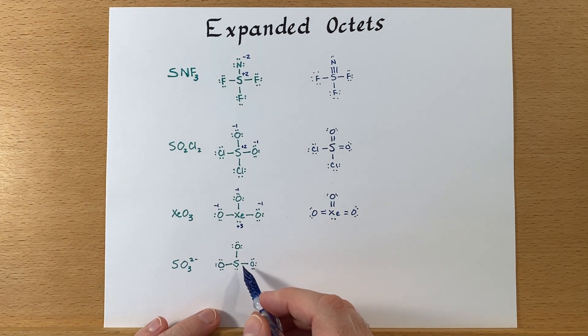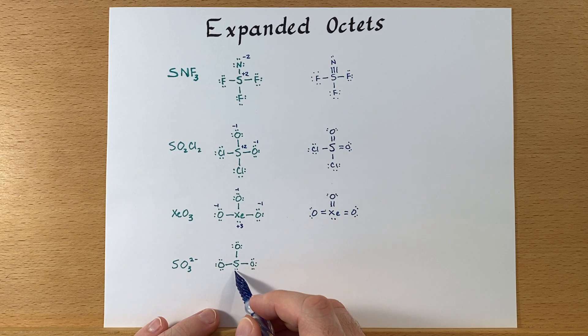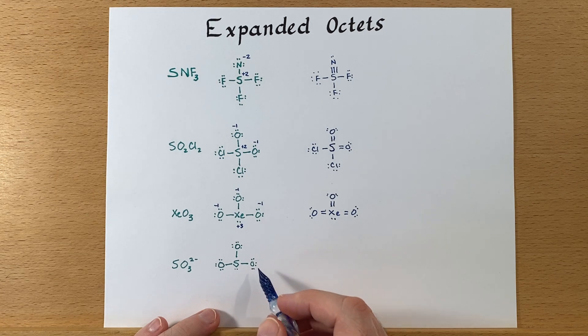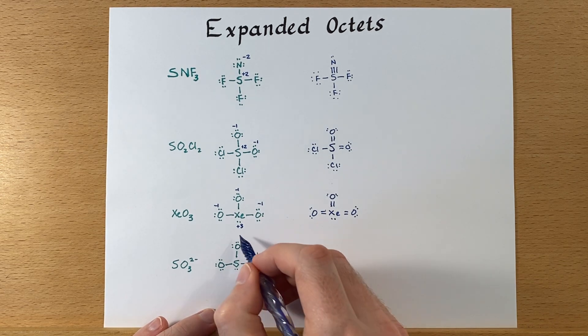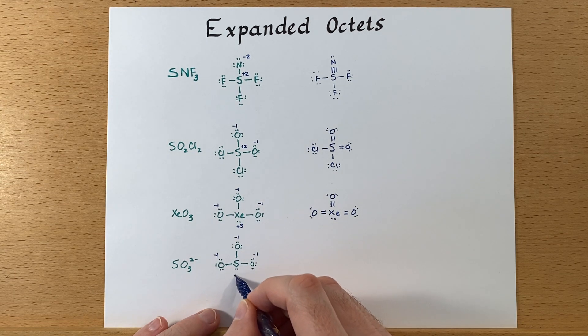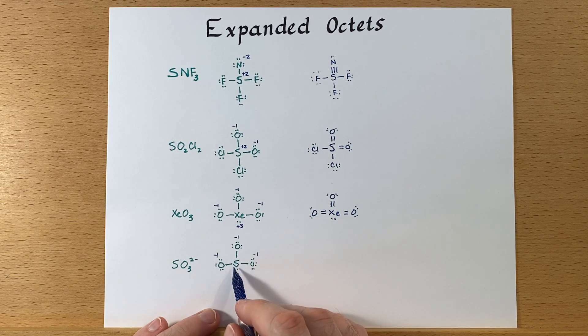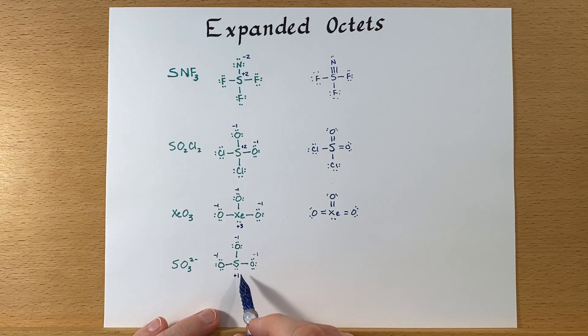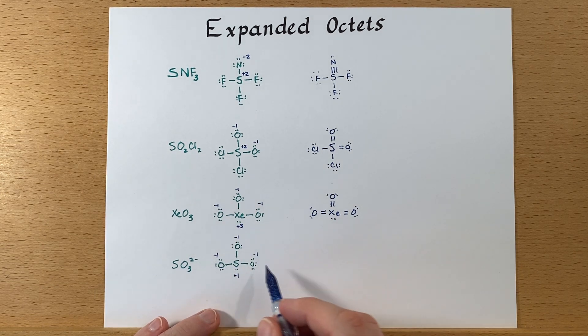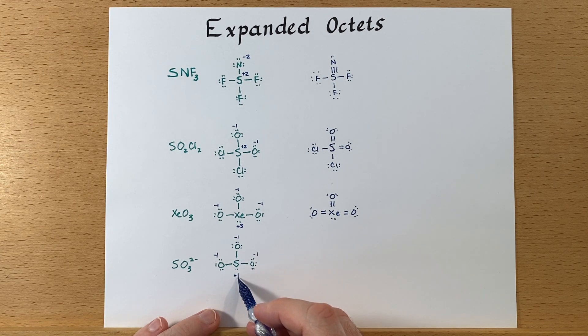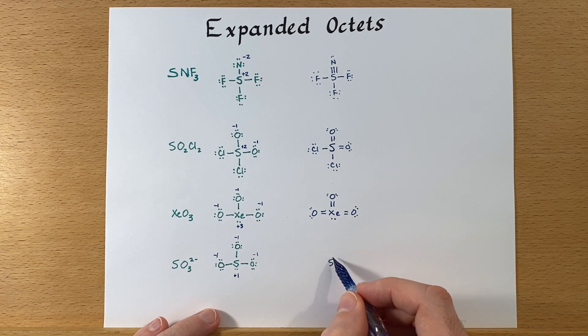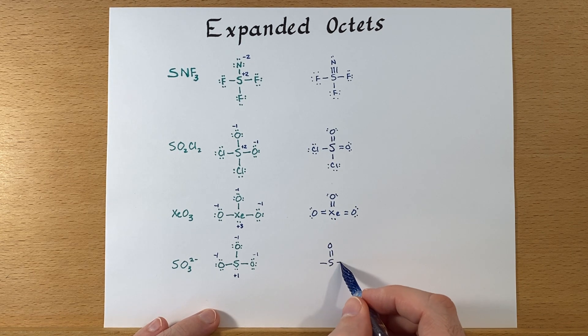SO3 two negative. Here is the structure with octet rule observed. And if we count this up, we'll have negative charges on the oxygens and we'll have a positive charge on the sulfur. One, two, three, four, five. This isn't terrible because we do need two negative charges somewhere there, but we could make it better by not having two of these charges.